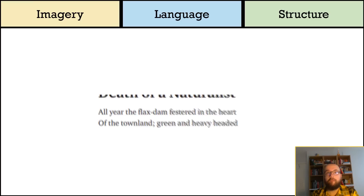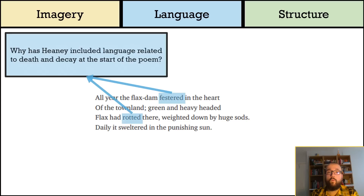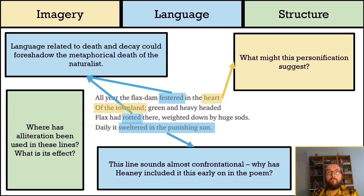Here we have the poem's first four lines, and there are four questions to consider. Festered and rotted are both words related to decay and death, although here they have been used in a more literal and natural way. By having language related to death early on in the poem, Heaney may be foreshadowing the eventual metaphorical death of the poem's eponymous naturalist.